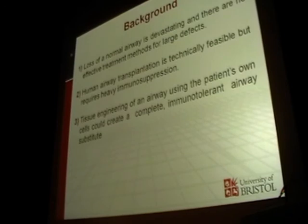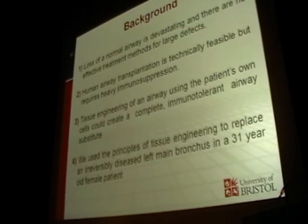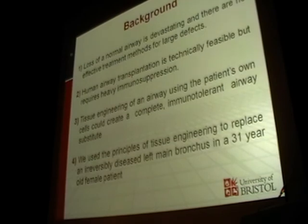Therefore, we wondered if it would be possible to use a tissue engineering approach to develop a new airway substitute, and to use the patient's own cells so that it would be immuno-tolerant and not be rejected by the patient's body. Our group, together with several other groups from all across Europe, became involved in generating this new tissue engineered airway, and we used it to replace an irreversibly diseased left main bronchus in a 31-year-old female patient.